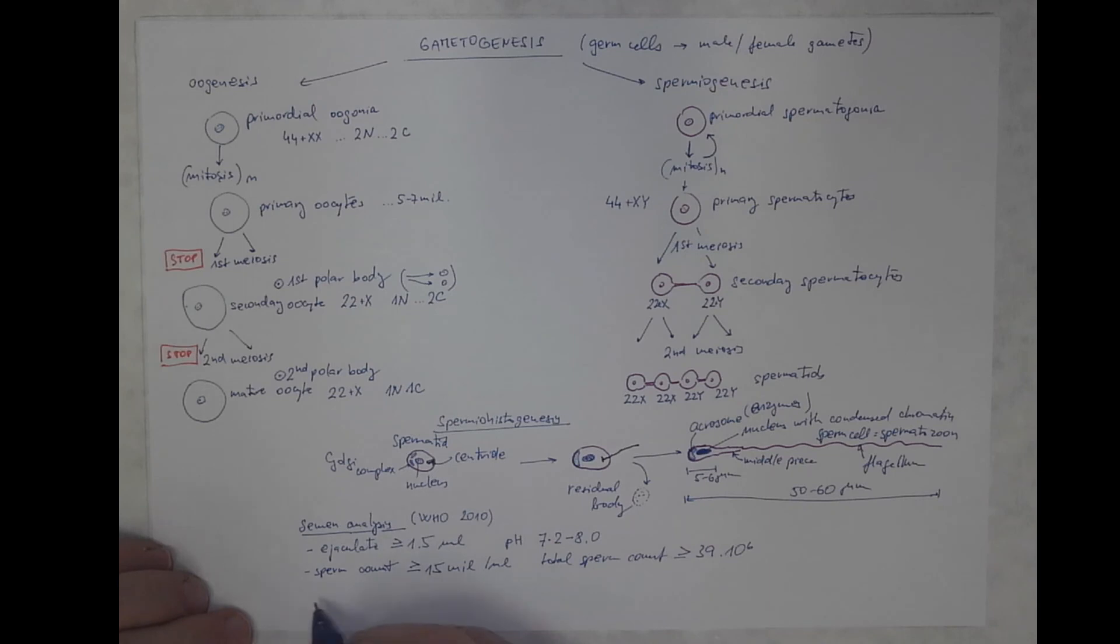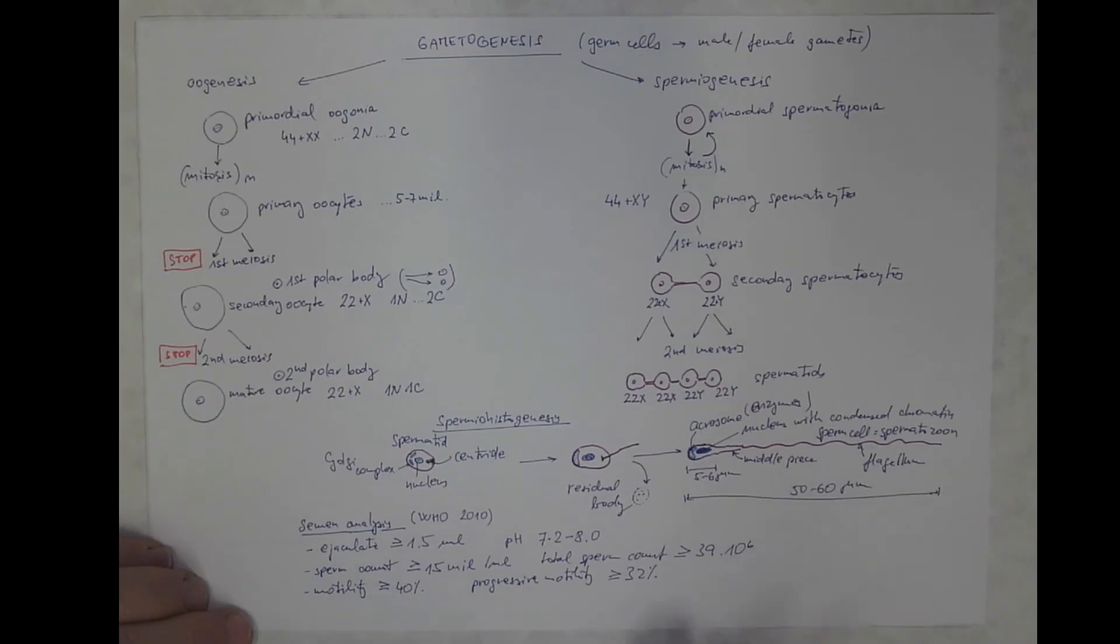The motility, so the percentage of motile sperm cells should exceed 40% of the total count, and the progressive motility should be at least 32%. These are sperms that are really moving in some direction, not just hanging around on the same spot.